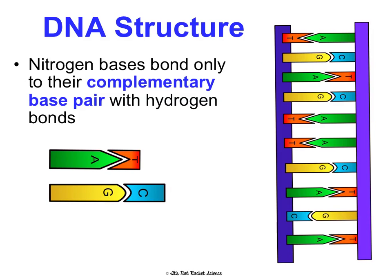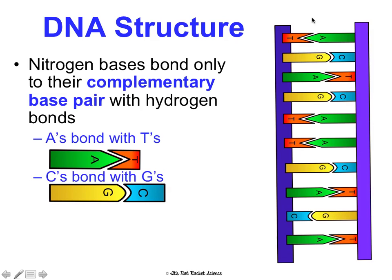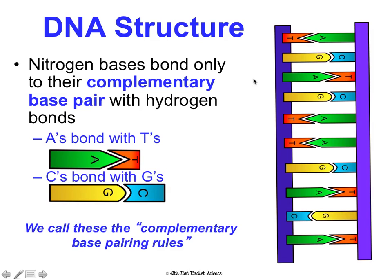Let's talk more about those base pairs. Nitrogen bases bond only to their complementary base pair with hydrogen bonds — they always bond the same thing. A's always bond with T's, and C's always bond with G's. These are the complementary base pairing rules — specifically, the DNA complementary base pairing rules. So anywhere you see a T, you should see an A; anywhere you see a C, you should see a G.